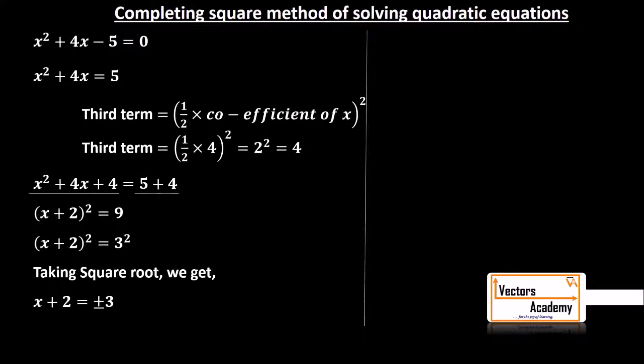Always remember, when you take square root, you need to mention the plus and minus sign as well. Now once you have done that, we will calculate x using the positive sign first. So x + 2 = 3.